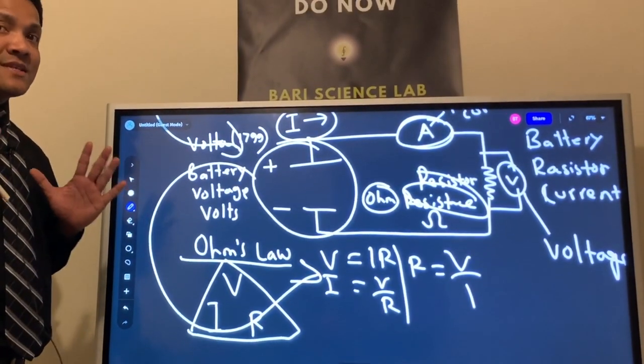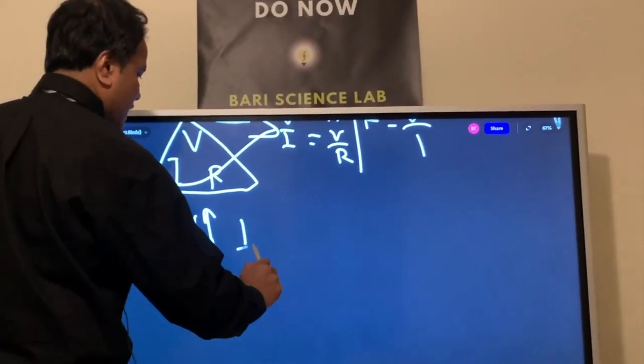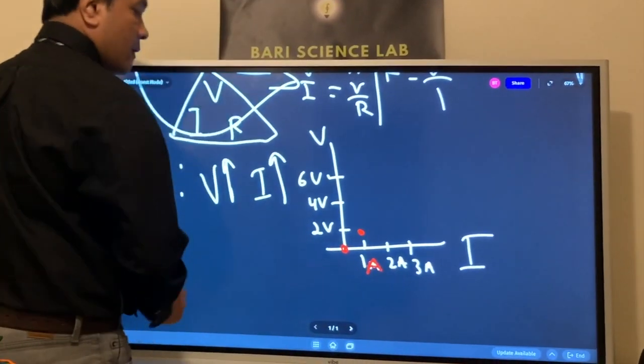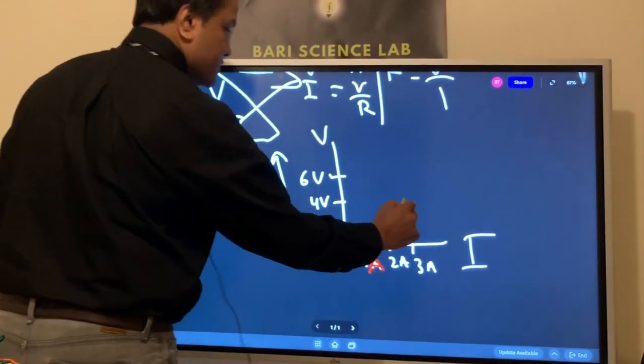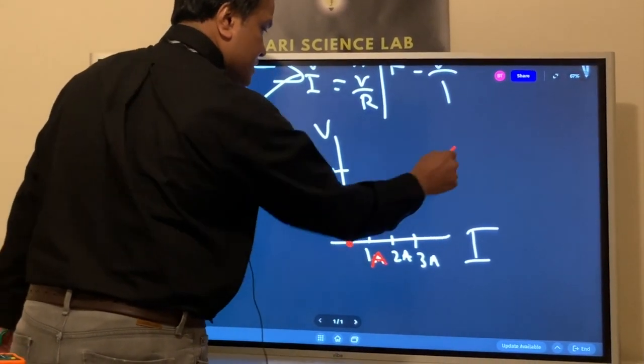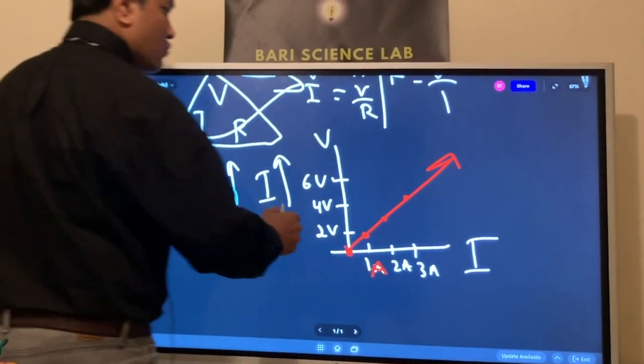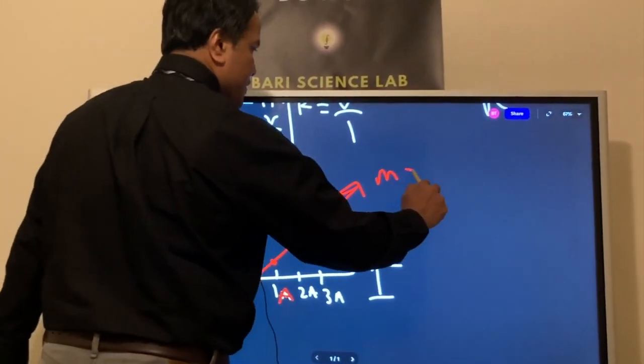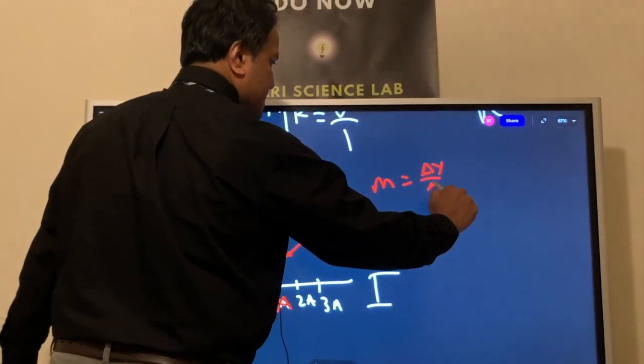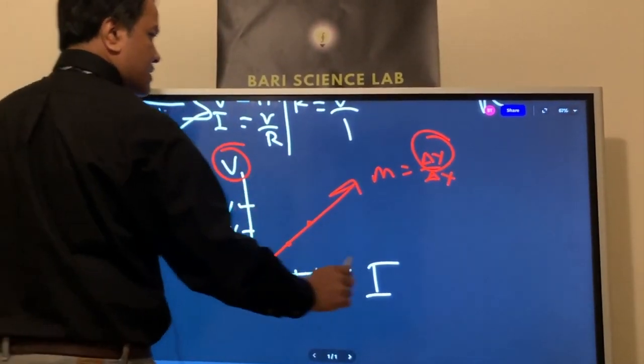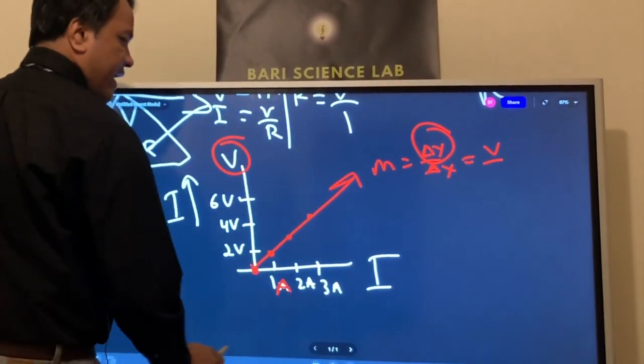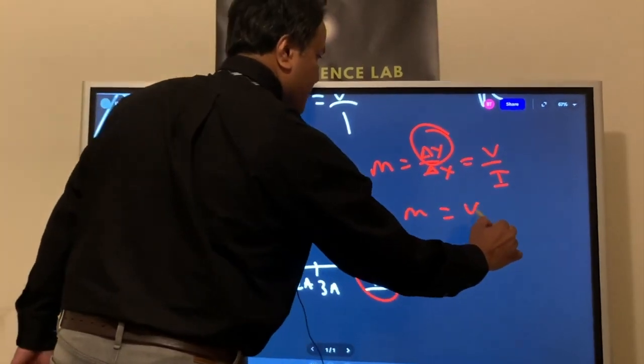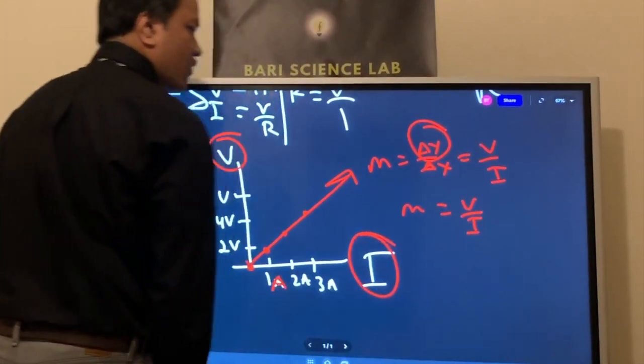Now we're going to try to understand the relationship. If voltage increases, then the current increases as well. Two volts, one amp. Four volts, two amps. Six volts, three amps. So the relationship is direct. And we even know the slope of this line. The slope is delta Y over delta X. What is our delta Y? Voltage. What is our delta X? Current. So we see M is equal to delta V over I.